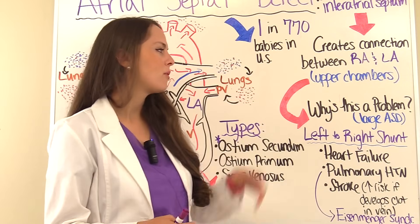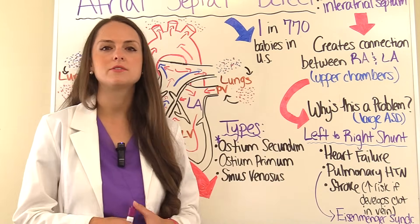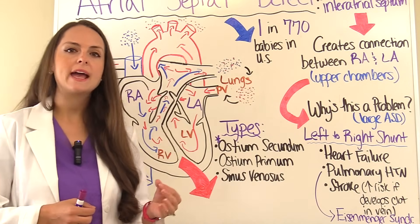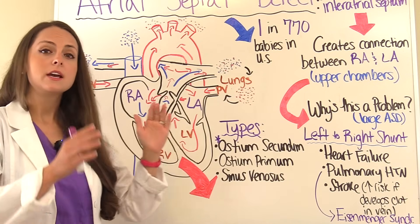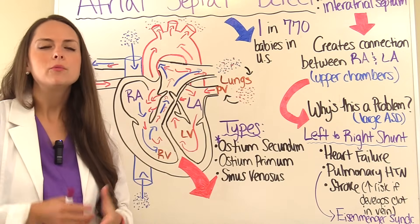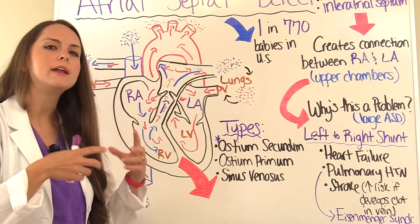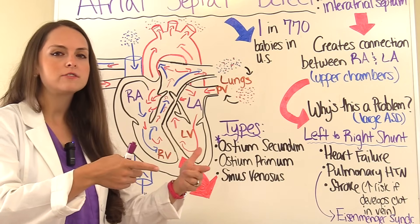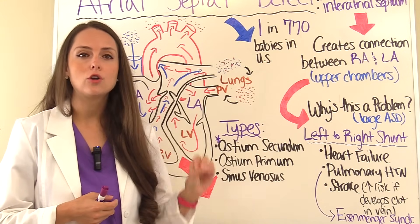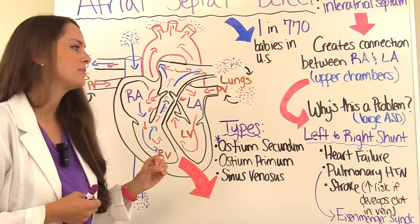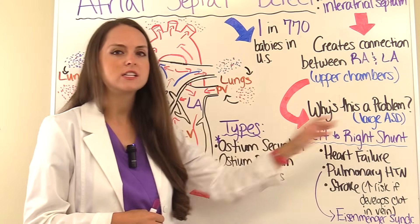Why is this a problem? Why do we not want a person to have an atrial septal defect? Well, small ASDs — just a little opening in the area that separates your right atrium from your left atrium — really don't cause a lot of problems because it's not allowing a lot of blood to flow from the left atrium to the right atrium. But when you get a large ASD, a large hole in that intra-atrial septum, we get problems. What happens is it creates a left-to-right shunt.